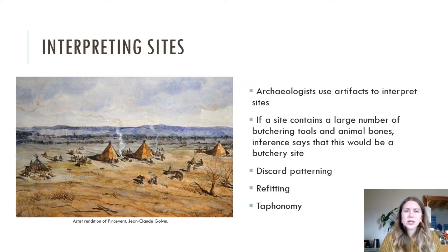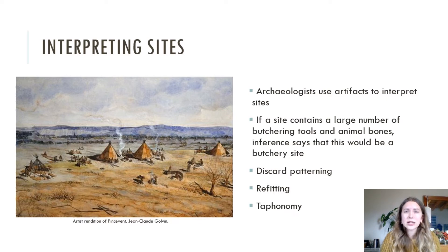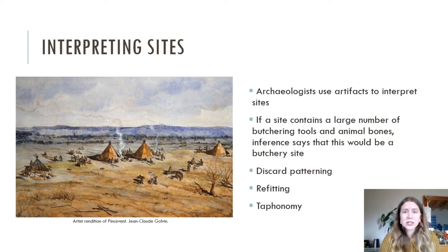Now we're going to get into site interpretation. Archaeologists use artifacts to interpret sites, and so it makes sense that lithics are often used to draw inferences about human behavior and site use. This is especially important with early sites such as Paleolithic or Stone Age sites. However, since we know that lithics are not always functionally diagnostic, this can present some problems when it comes to interpreting site use, and is one of the reasons why it's so important to consider assemblages as a whole.